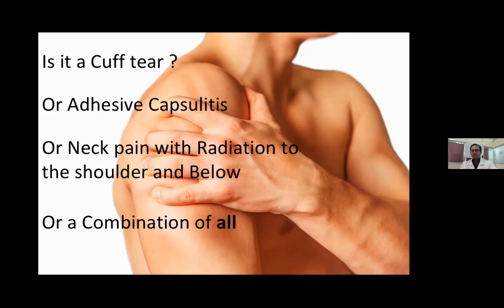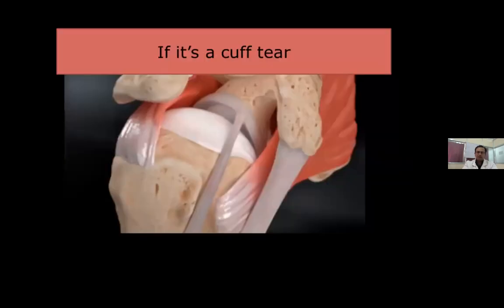To address this, we should always remember that pain around the shoulder can be a very layered phenomenon — there could be acute, chronic, or acute-on-chronic tear, combined with adhesive capsulitis and neck pain radiating to the shoulder. The difference is that patients with exclusively shoulder pain hold it differently from those with a neck element. So we have to delineate the site of origin of the pain. Neck examination is mandatory whenever evaluating a shoulder or cuff tear.